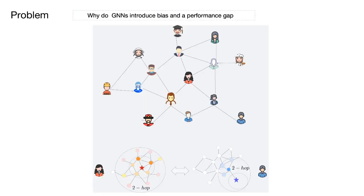One of the byproducts of message-passing neural networks is their potential bias towards weakly connected nodes.